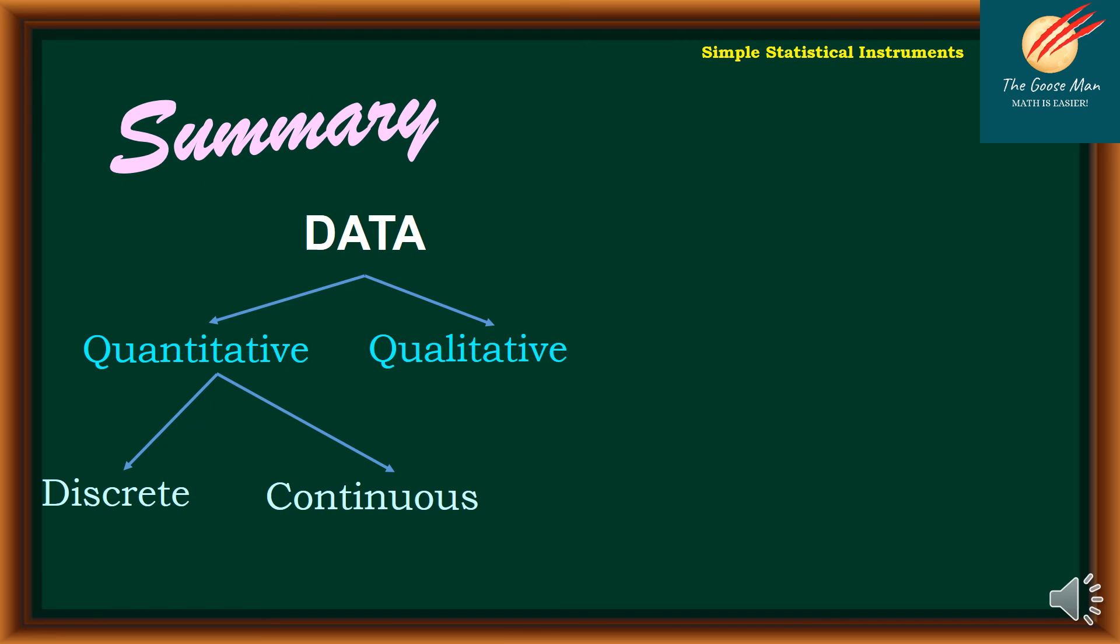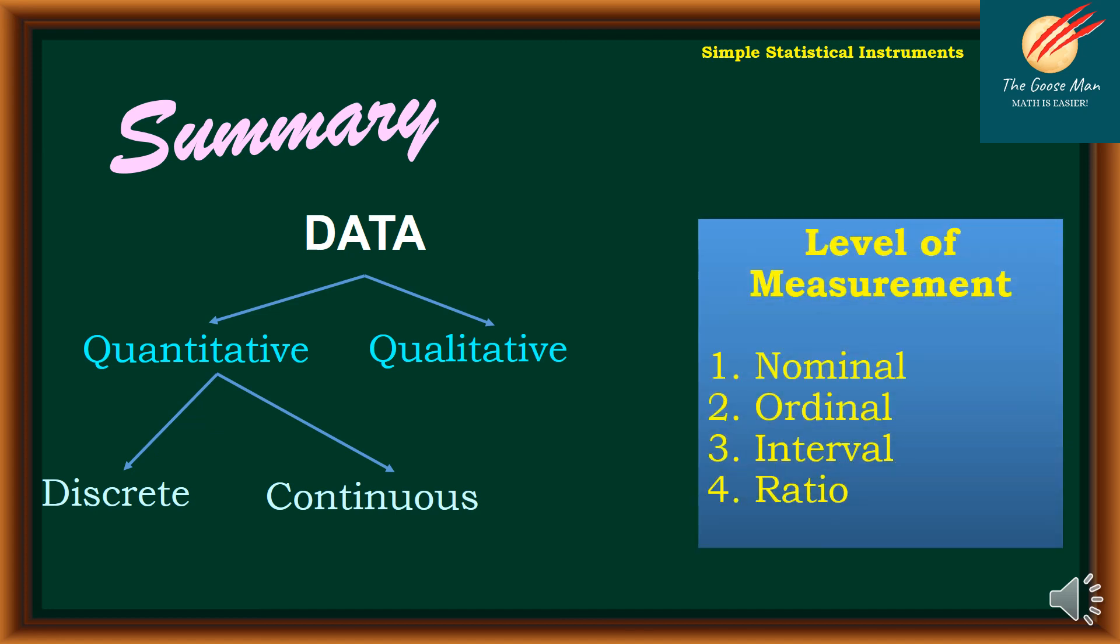To summarize our discussion, a simple statistical instrument. Data can be classified as either quantitative or qualitative. Quantitative meaning to say that it's measurable. It can be discrete meaning to say that it's a whole number or continuous that is actually in a fraction or decimal. On the other hand, data can be classified as qualitative. Meaning to say we can use our senses. And also, we discuss about the level of measurements either that is nominal, ordinal, interval, or ratio. That ends our discussion on the simple statistical instrument.